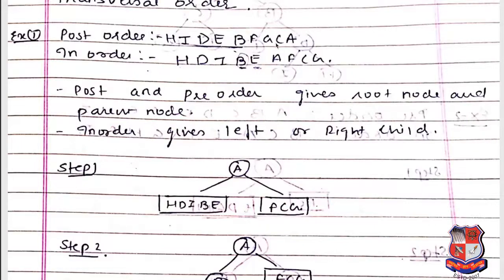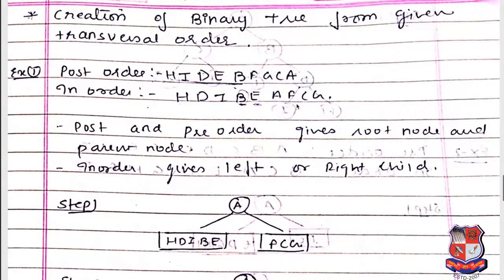The next node in reverse post-order is C. We find C in the in-order sequence and divide into left part F and right part G. Then we move to the left portion of A's subtree and consider B, dividing into left H, D, I and right E.